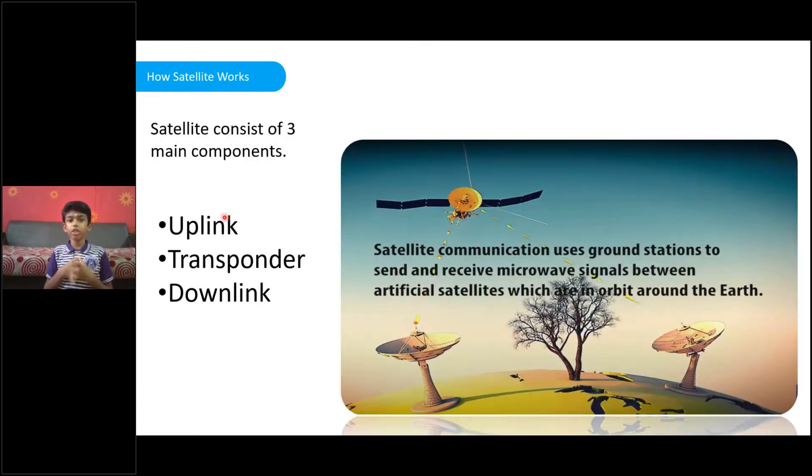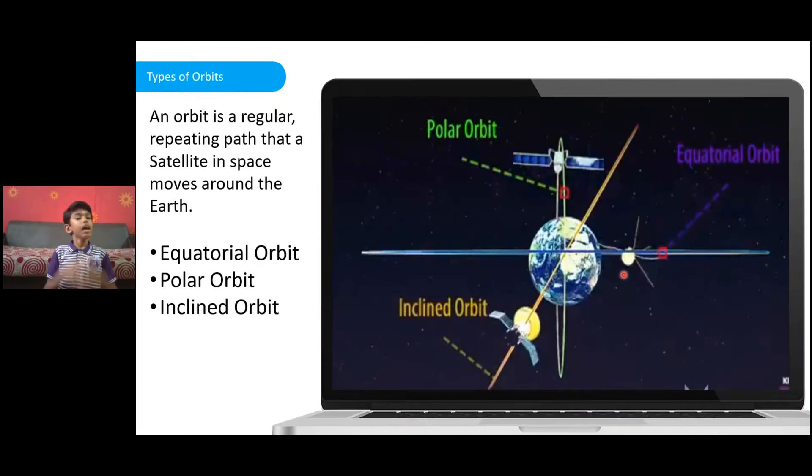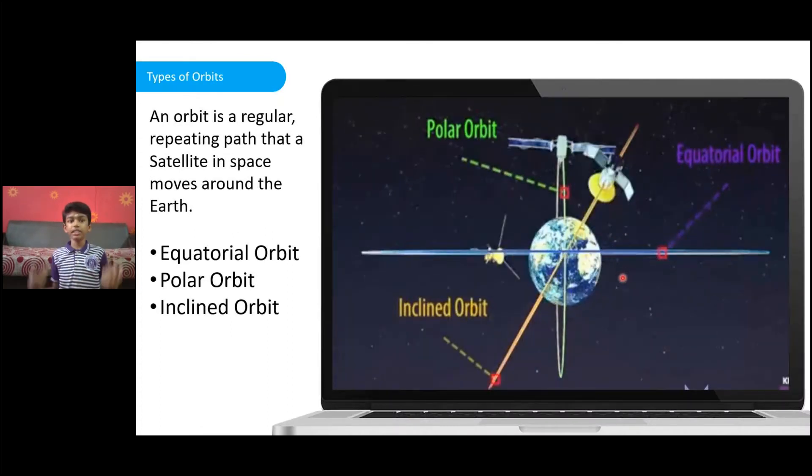Satellites contain three major components. Uplink supports transmit signals back to the satellite, transfer chain signals into frequency, and downlink transmits back to Earth. An orbit is a path where a satellite moves.